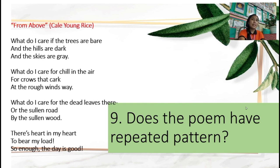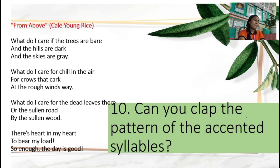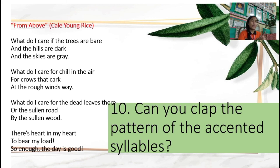Does the poem have a repeated pattern? Yes. Can you clap the pattern of the accented syllables? Let's try: 'What do I care if the trees are bare and the fields are dark and the skies are bright? What do I care for chill in the air...' The answer should be yes — there is what we call beat.